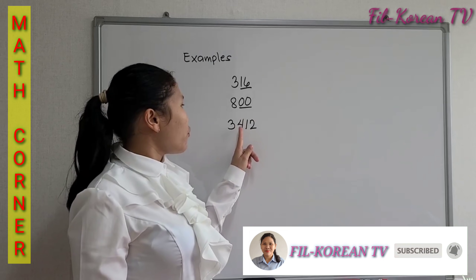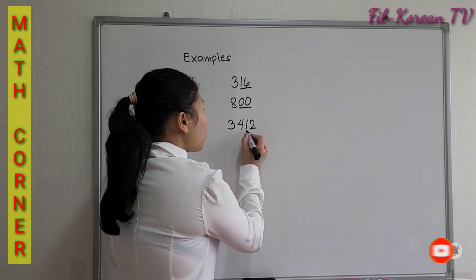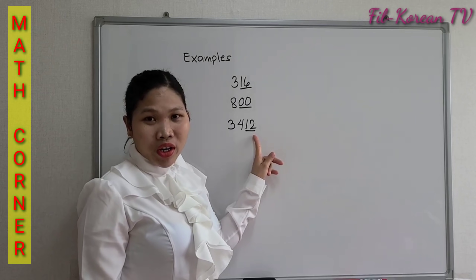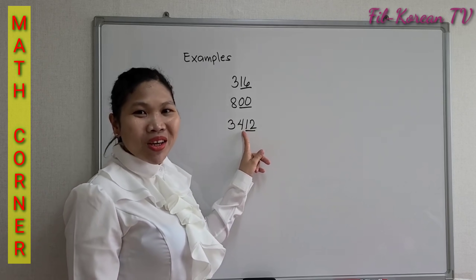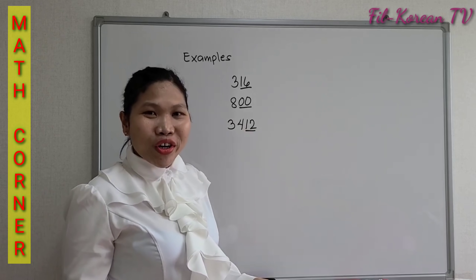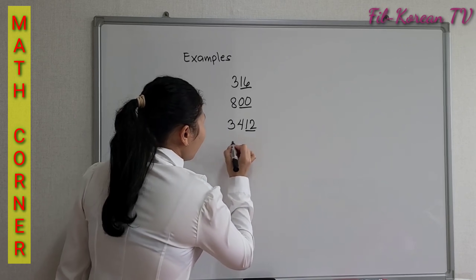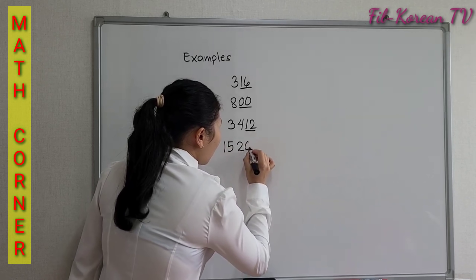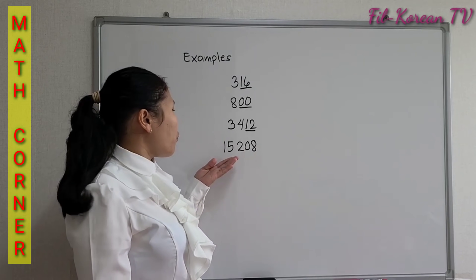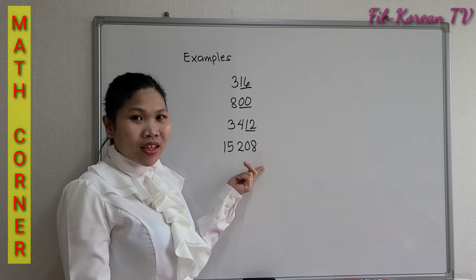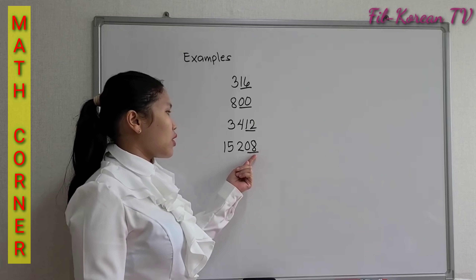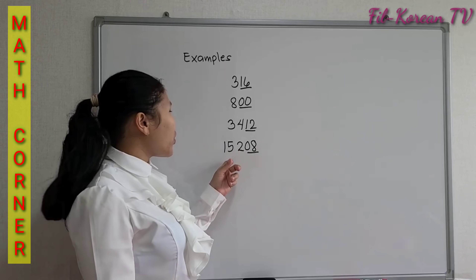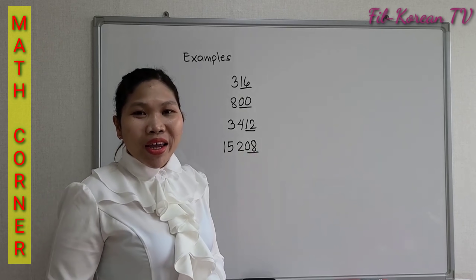Another example: 3,412. The last two digits form a number 12. 12 is a multiple of 4, so 3,412 is divisible by 4. Next: 15,208. The last two digits form a number 8. 8 is a multiple of 4, thus 15,208 is divisible by 4.